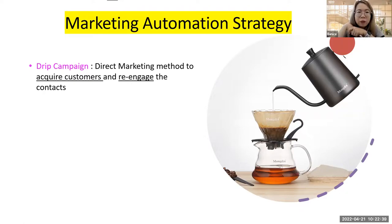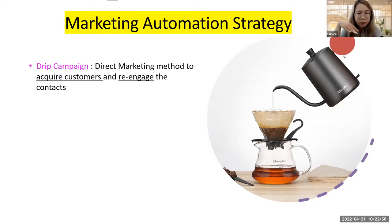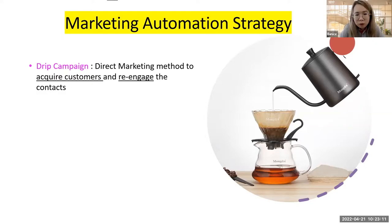After the loyalty program strategy, we also need a marketing strategy — specifically marketing automation. We should make marketing and advertising systematic, in a flow. We call this a 'drip campaign.' Imagine drip coffee: you pour hot water into the coffee powder and the coffee drips slowly. This is a direct marketing method to acquire customers and re-engage with them.